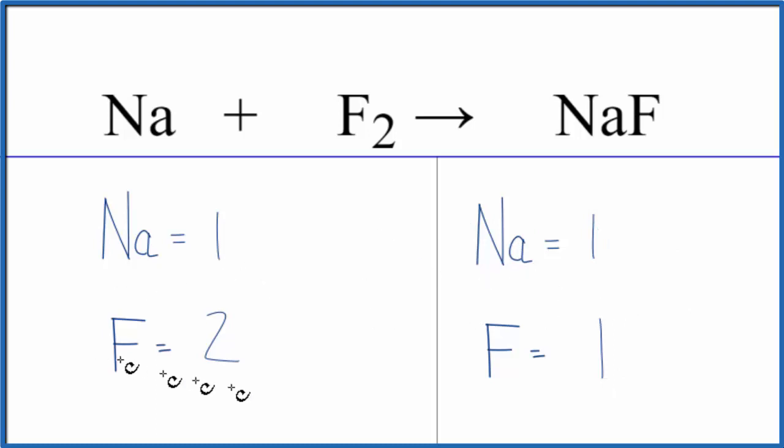The fluorines aren't balanced - we have two here and one here. I'm going to put a coefficient of two in front of the sodium fluoride. So now we have one sodium times two, which gives us two sodium atoms. This two applies to everything, so we have one fluorine times two, and now the fluorine atoms are balanced.